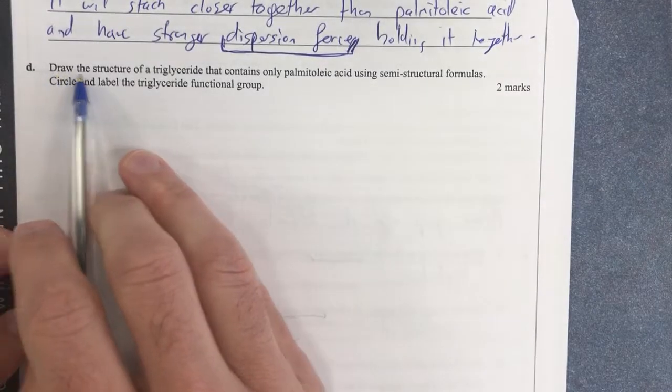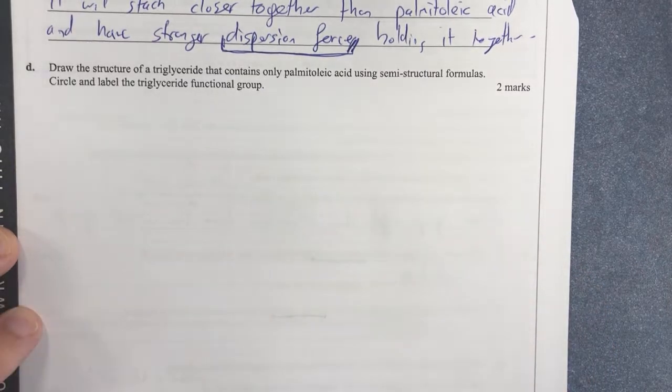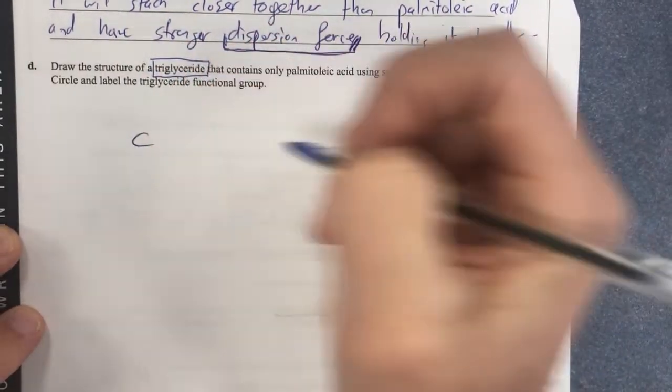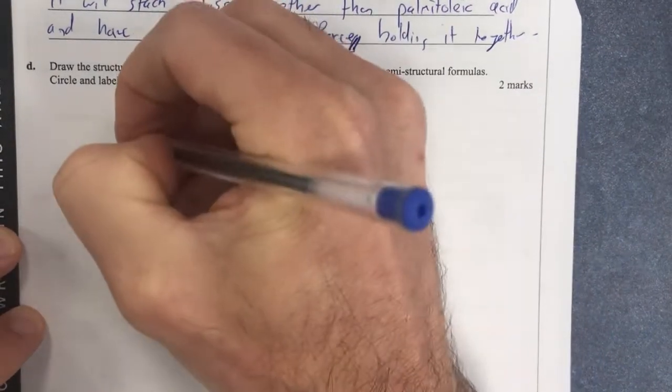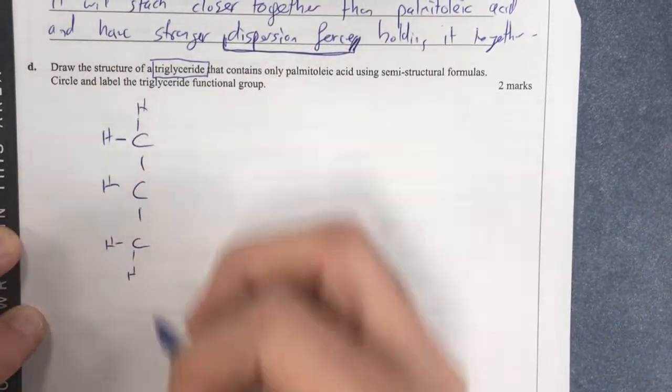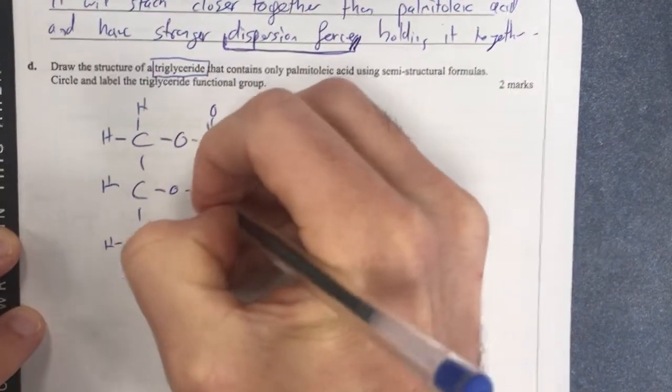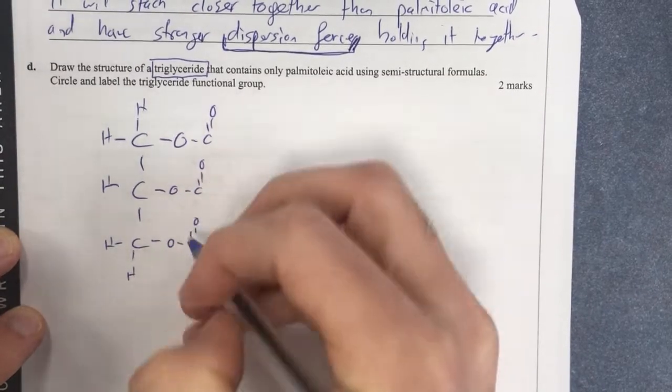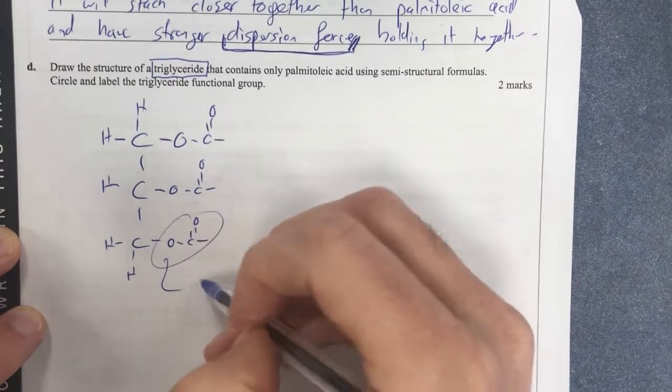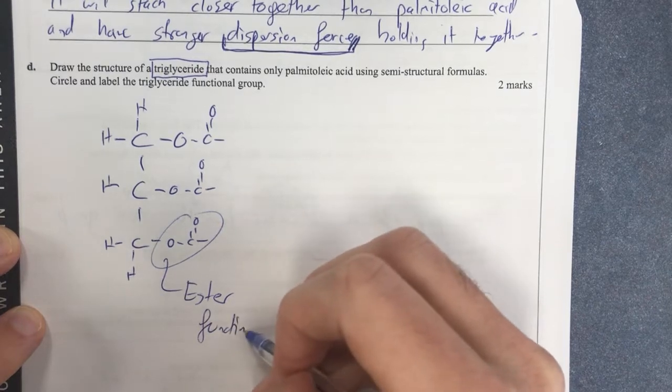Lastly, draw the structure of a triglyceride that contains only this type of acid using the semi-structural formulas. Circle and label a triglyceride functional group. Alright, triglycerides, you should have a system in drawing these. Basically, you start off with your glycerol backbone, which will be simply this guy. Then you should draw in your ester functional group, which we're going to circle and label by the sounds of it. Because that is the functional group that is within the triglyceride. So therefore, I'll just do that now. That is an ester functional group.